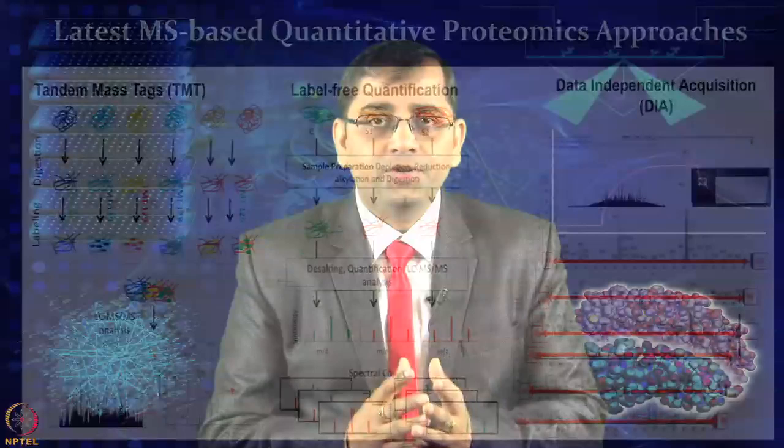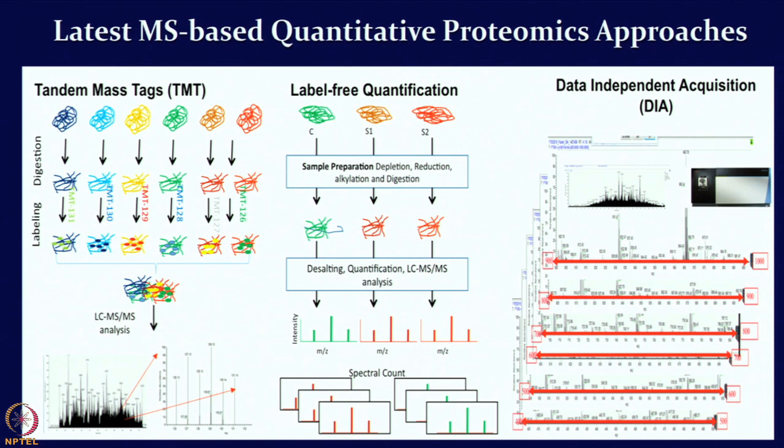In label-free quantification, you look at the spectral count of peptides. If a given protein's expression is very high in a disease sample compared to control, many peptides will be formed for that protein and a higher spectral count will be obtained. You can measure those spectral counts and use that information for label-free quantification.